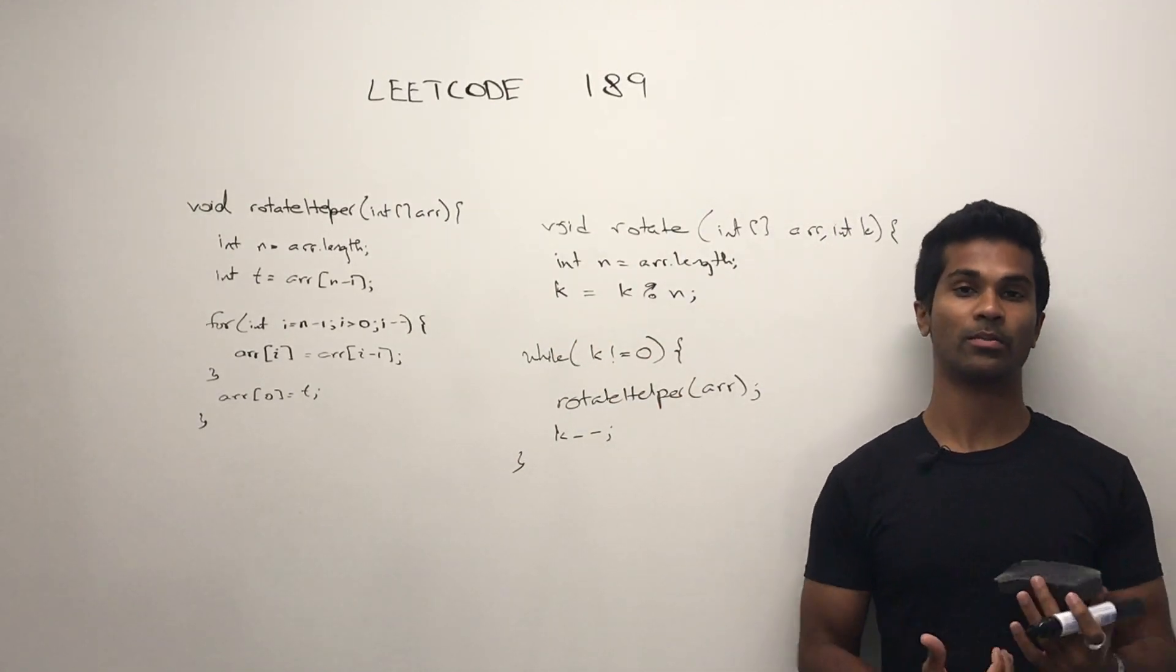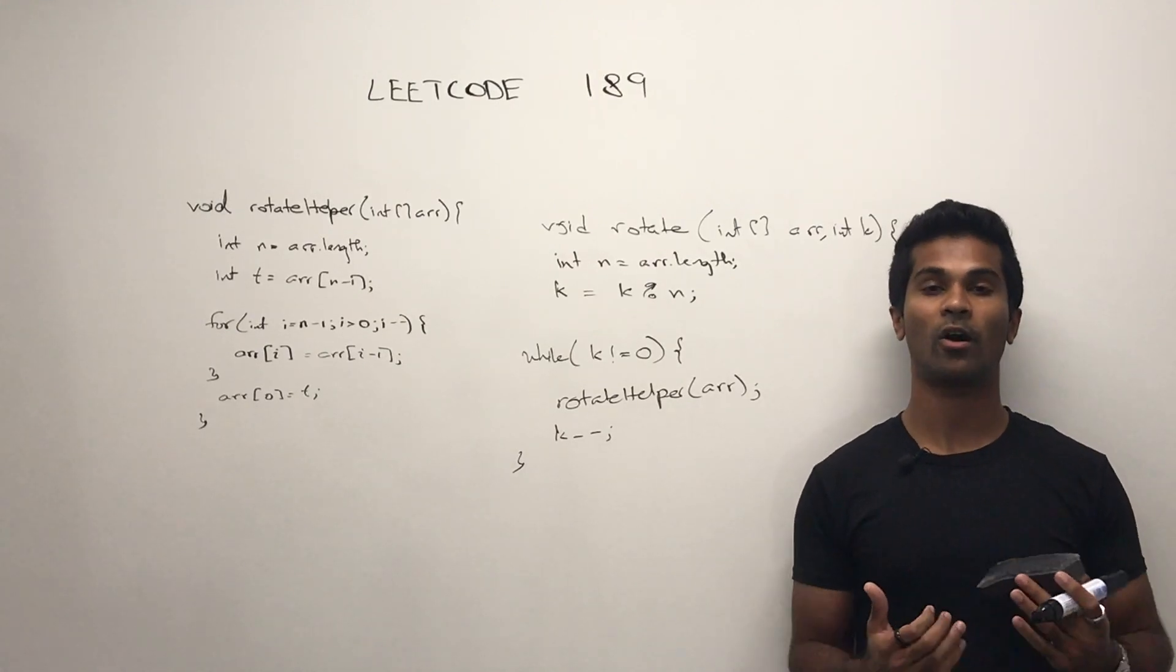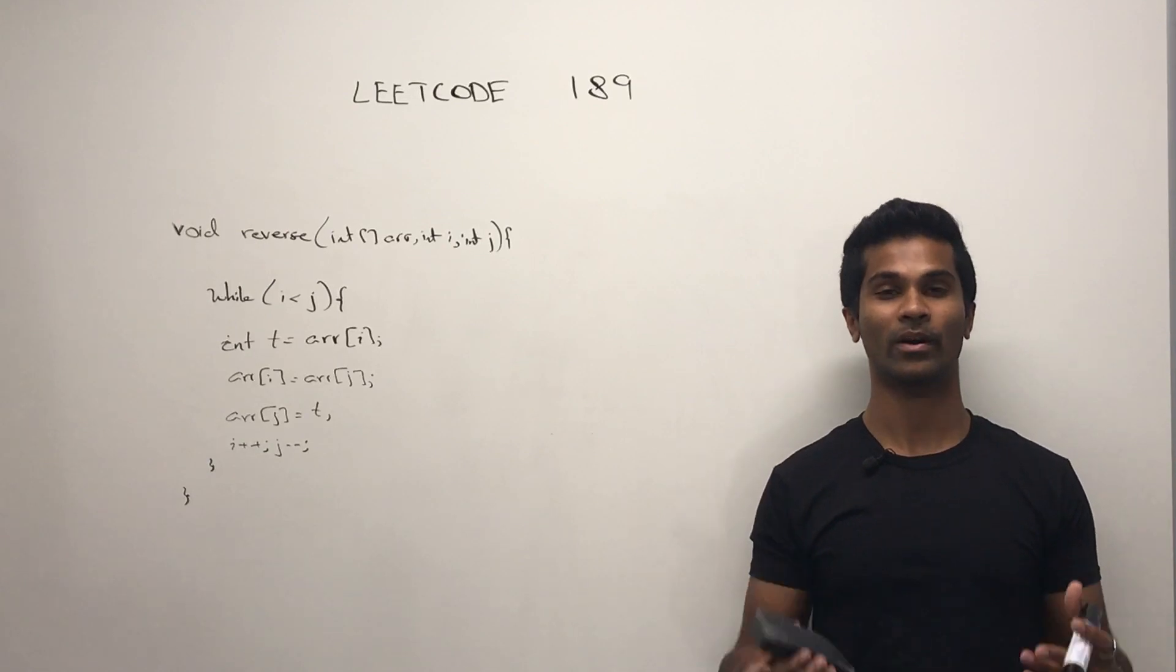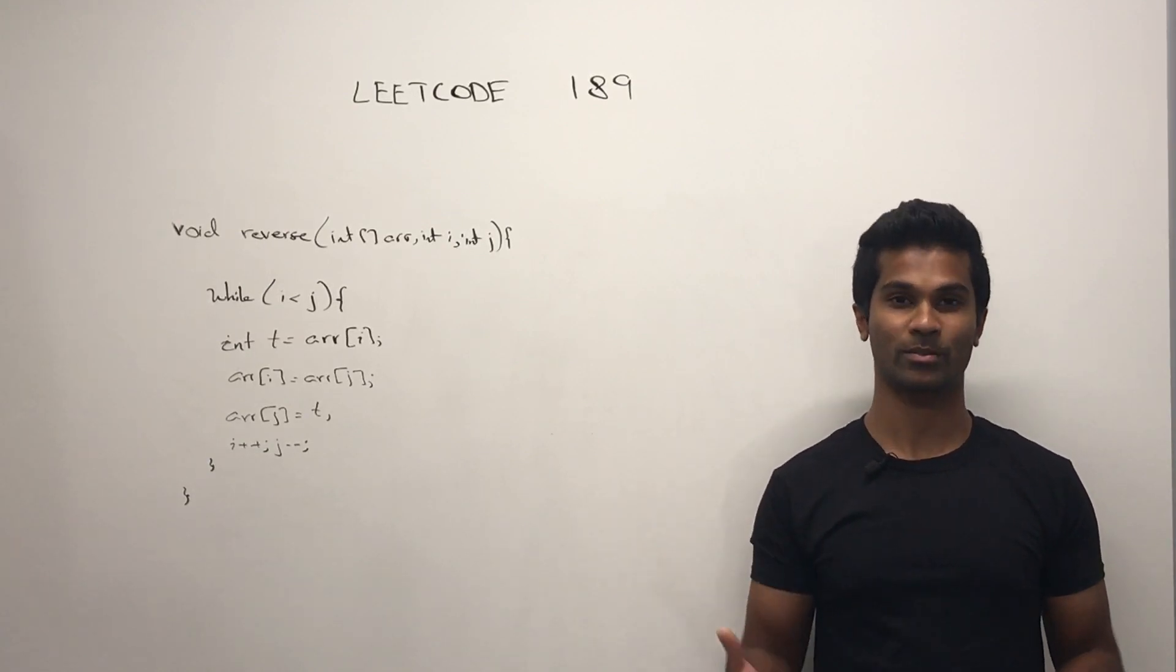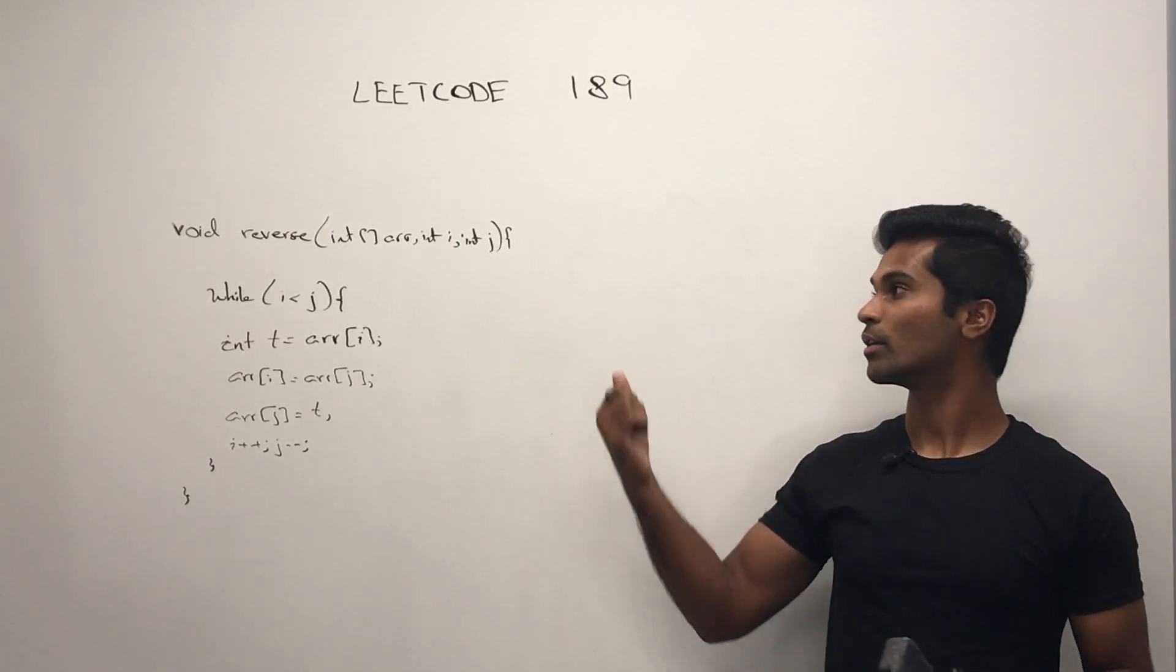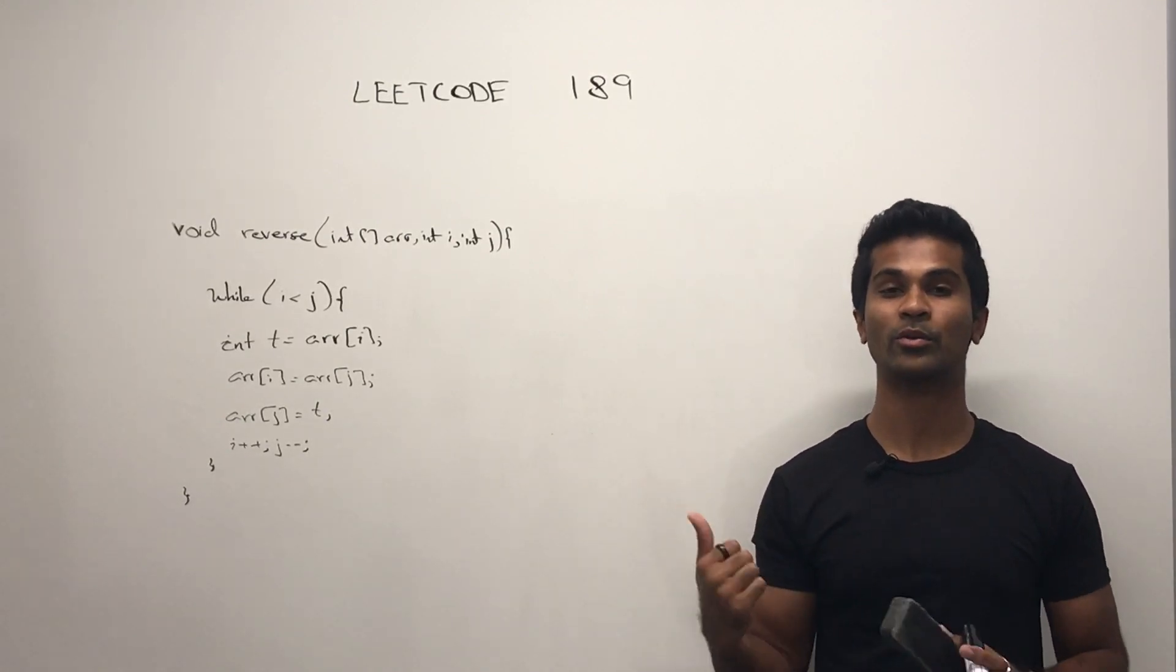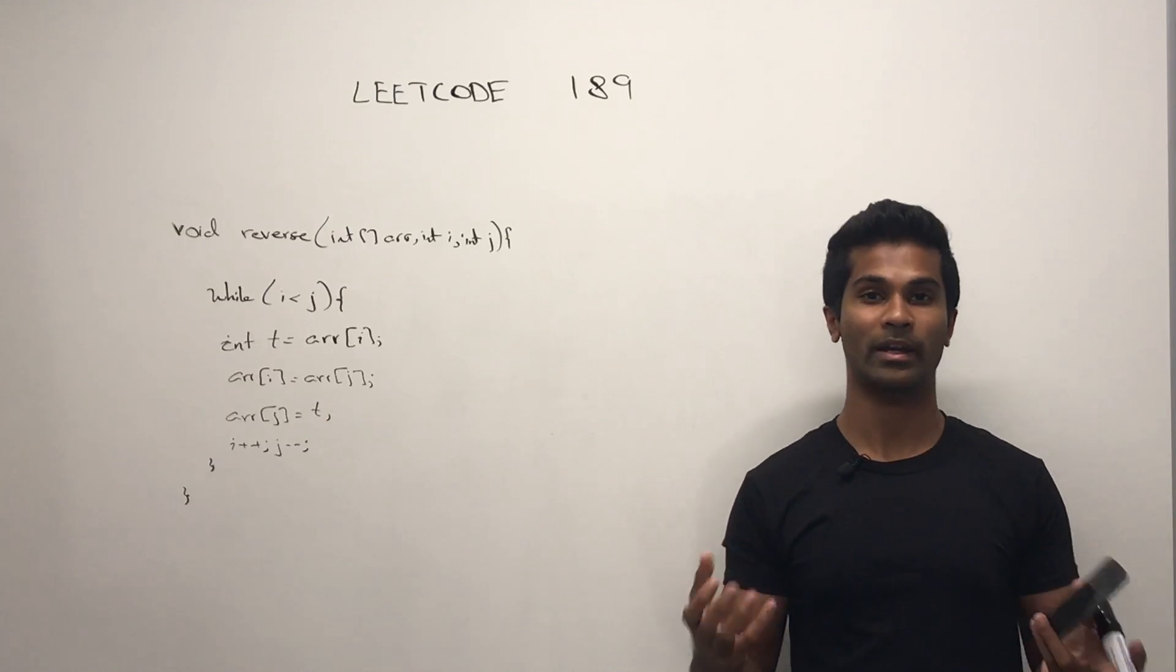So that's the basic approach. Now let's look at the optimized approach from the LeetCode solution tab. For our optimized approach, we're going to use reversing an array as a subroutine to our solution. Let's look at how we're going to use the subroutine to rotate our array by k times.